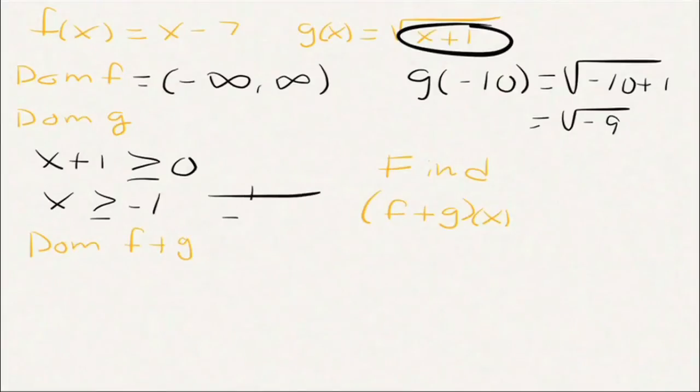So if we were going to graph this guy, that's -1, and then we shade the way the arrow goes, this way. Do we include? Yes, we do, because of the 'or equal to'. So we write that in interval notation as [-1, ∞). Nice. Now, what do they want? Down here, they want you to find the domain of f and g.